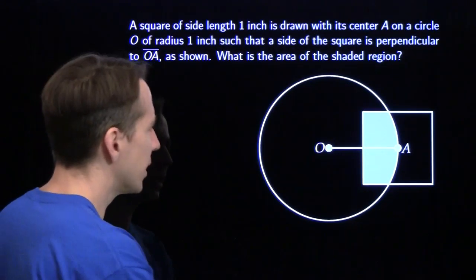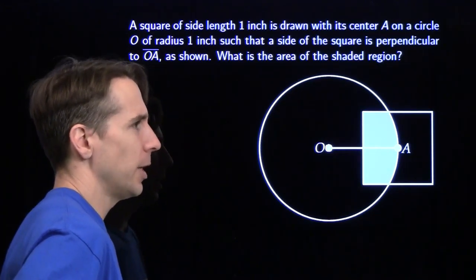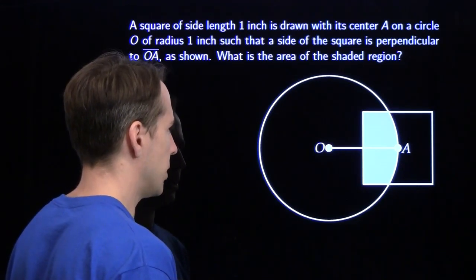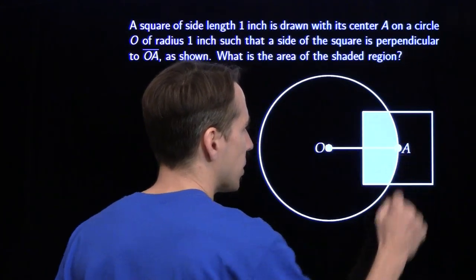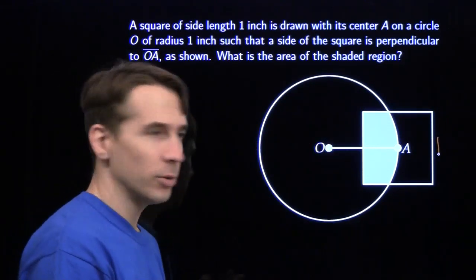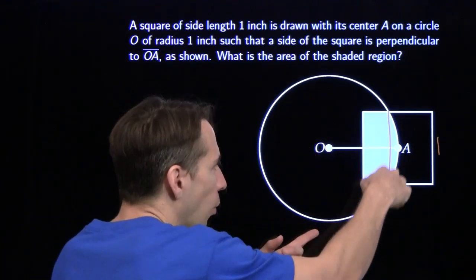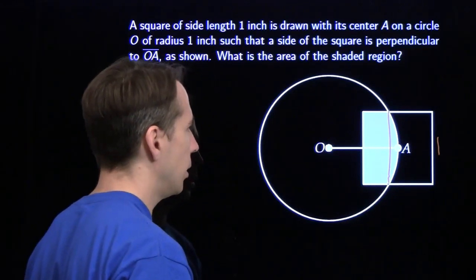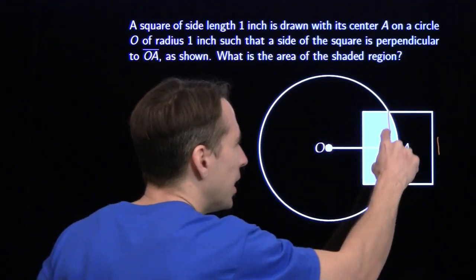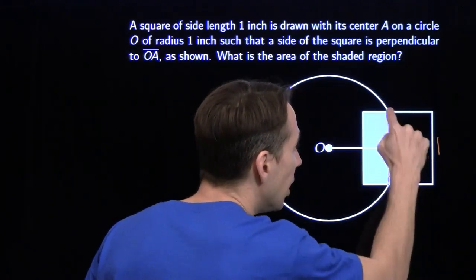On to the next problem. Once again, we have this oddly shaped region. What do you see there, Harvey? Rectangle plus a sector minus a triangle — just like that. This guy's terrifying. We've got a square. The center of the square is on the circle. Radius of the circle is one. Side length of the square is one. This weird piece out here has a name — we call it a circular segment. You get a circular segment when you start with a sector and chop off a triangle.